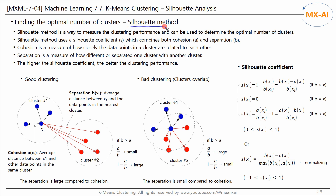Next, let's look at the silhouette method. The silhouette method is a way to measure clustering performance and can be used to determine the optimal number of clusters. It uses a silhouette coefficient, which combines both cohesion and separation. Cohesion is a measure of how closely the data points in a cluster are related to each other. Separation is a measure of how different or separated one cluster is from another. The higher the silhouette coefficient, the better the clustering performance.